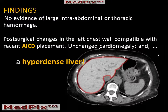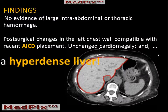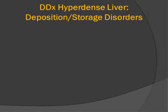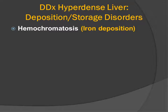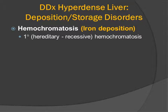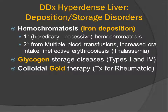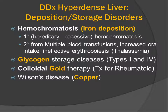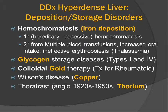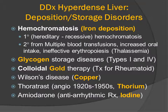We also see some post-surgical changes, but the hyperdense liver is the main finding in this patient. The differential diagnosis for a hyperdense or hyperattenuating liver most commonly includes deposition or storage disorders: hemochromatosis where iron is deposited — which may be hereditary or secondary to blood transfusions, increased oral intake, or ineffective erythropoiesis such as in thalassemia — glycogen storage disease, colloidal gold therapy used for rheumatoid arthritis, Wilson's disease where copper is deposited in the liver, Thorotrast which was a contrast medium used from the 1920s to 1950s containing thorium, and amiodarone, an antiarrhythmic drug that contains iodine.